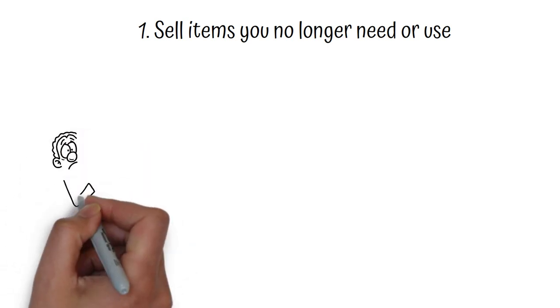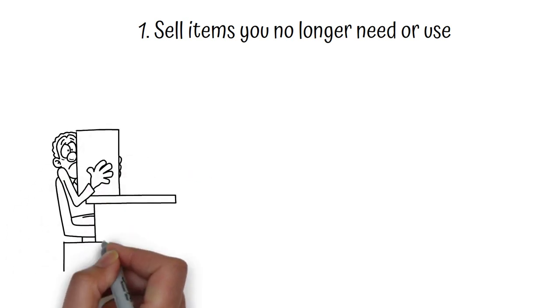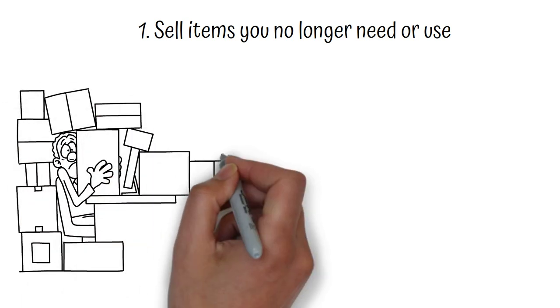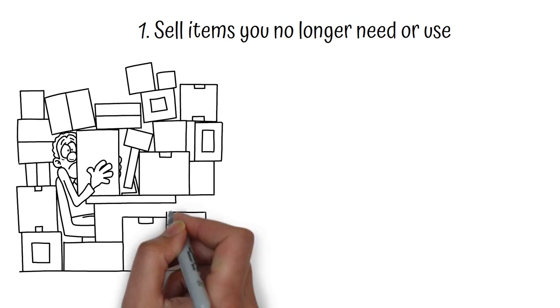Number 1. Sell Items You No Longer Need or Use. One way to make some extra money on a low income is to sell items that you no longer need or use. This can be a great way to declutter and free up space in your home, as well as make some extra cash.